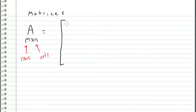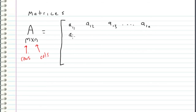Each entry we can define with index notation like this, where the first number represents the row number and the second number represents the column number. So below this, we would be in the second row, first column; second row, second column; all the way to A, second row, Nth column, because we have N columns.